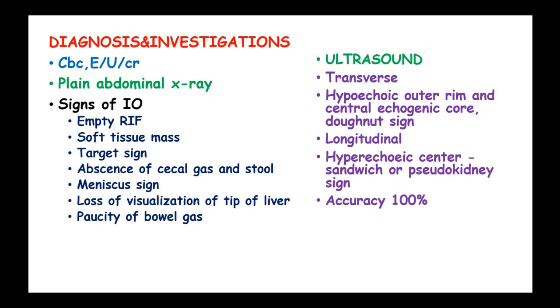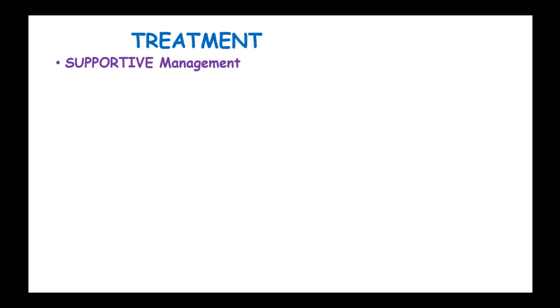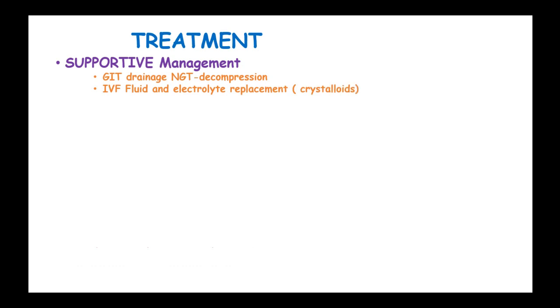The accuracy of ultrasound is 100%. Contrast studies such as barium enema can also be used. Supportive management includes gastrointestinal tract drainage with a nasogastric tube, decompression, intravenous fluids, and electrolyte replacement using crystalloids. The maintenance fluid rule is 4-2-1 per hour.